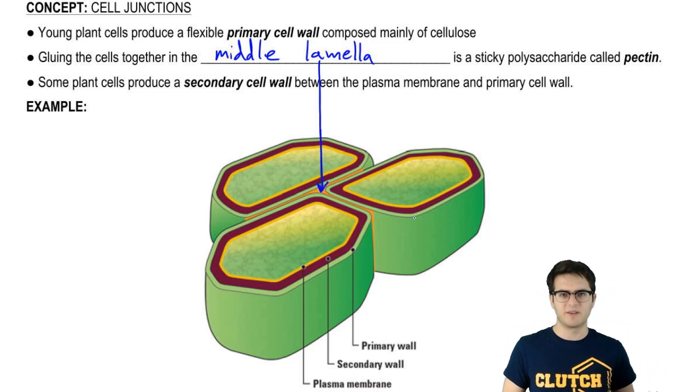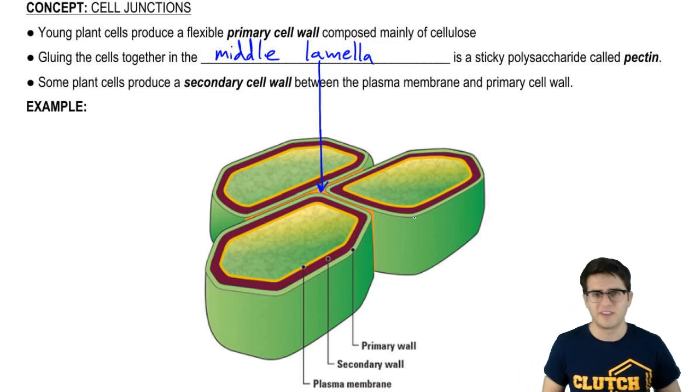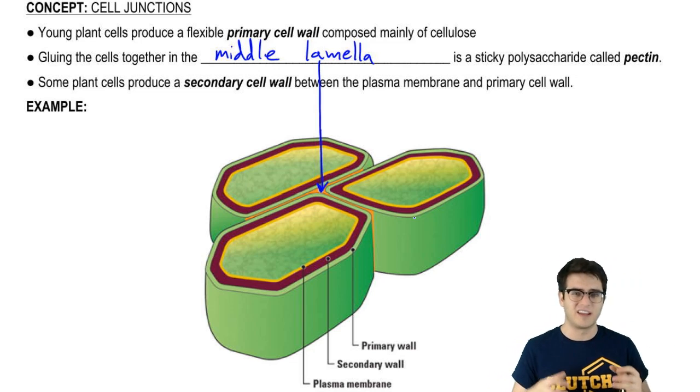Now you actually may have heard of pectin. It's something that we use in foods to give foods thickness. So this is often used in like jellies, gelatin, that sort of stuff that has that nice thick consistency.